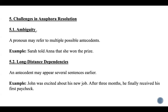Challenges in anaphora resolution: the first is ambiguity, where a pronoun may refer to multiple possible antecedents. For example, 'Sarah told Anna that she won the prize' — 'she' may refer to either Sarah or Anna. The second challenge is long-distance dependencies, where an antecedent may appear several sentences earlier. For example, 'John was excited about his new job; after 3 months, he finally received his first paycheck' — here 'he' refers to John, but it occurred several sentences earlier.